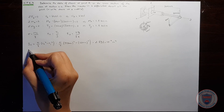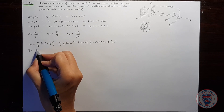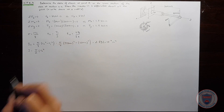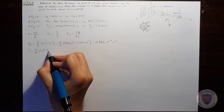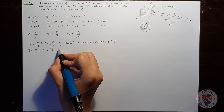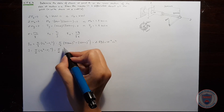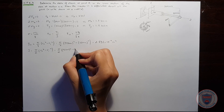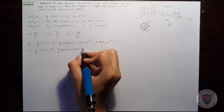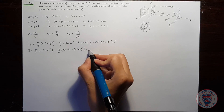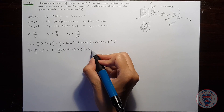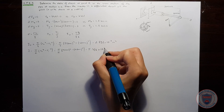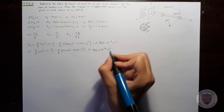Let's calculate the polar moment of inertia now. It will be equal to pi over 2 times the outer radius to the power of 4 minus the inner radius to the power of 4. Substituting the same values, it will be equal to 5.796 times 10 to the power of negative 6 meters to the power of 4.